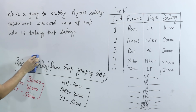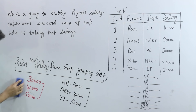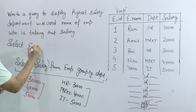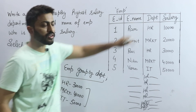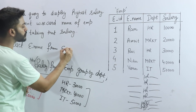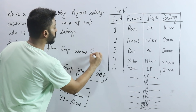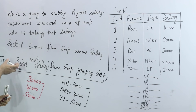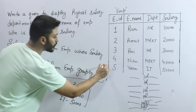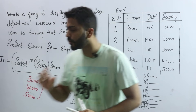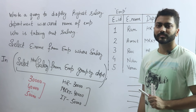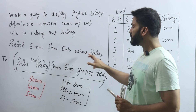Outer query कुछ इस तरह होगी: SELECT ename FROM employee WHERE salary IN (inner query). यहाँ पर IN keyword use करना है — equal to गलती से भी use नहीं करना। Equal to हमेशा दो values compare करता है, लेकिन यहाँ inner query 3 rows return कर रही है। जहाँ inner query multiple rows return करे वहाँ IN use करते हैं, equal to नहीं।